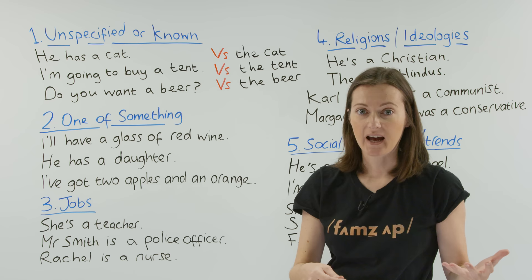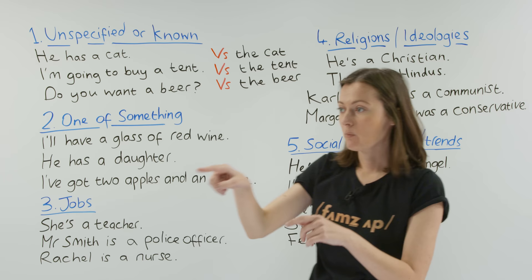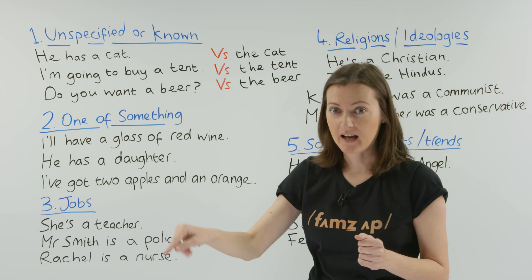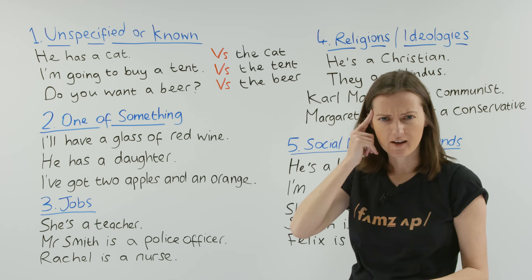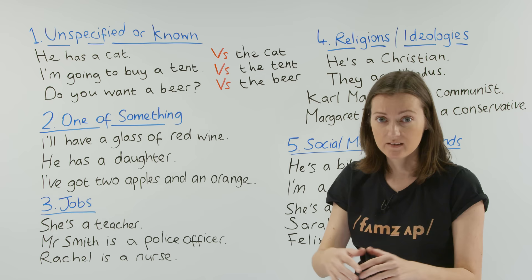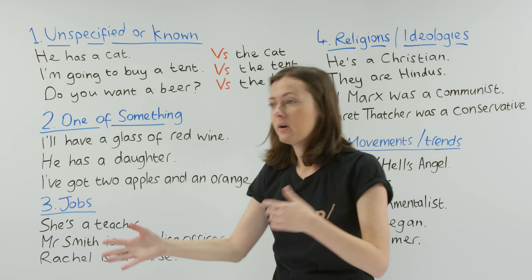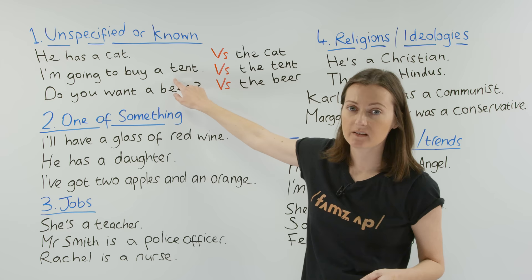When I say 'he has the cat', I mean that specific one — and you know the one I'm talking about. When I say 'I'm going to buy the tent', the meaning is different, as if I've already decided and chosen the tent before. Not just any tent — I'll go to the shop, look at them, and buy that one. So 'a tent' is unspecified, and 'the tent' is known.